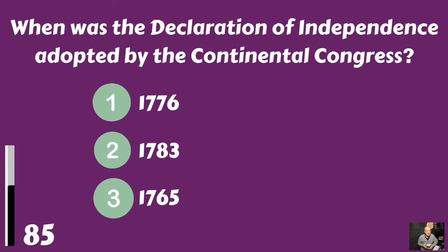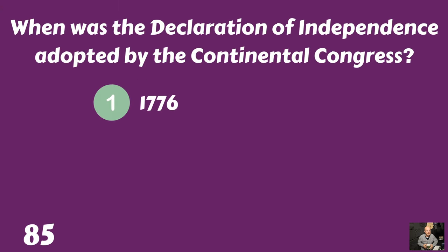When was the Declaration of Independence adopted by the Continental Congress? Was it 1776, 1783, or 1765? The Declaration of Independence was adopted in 1776.